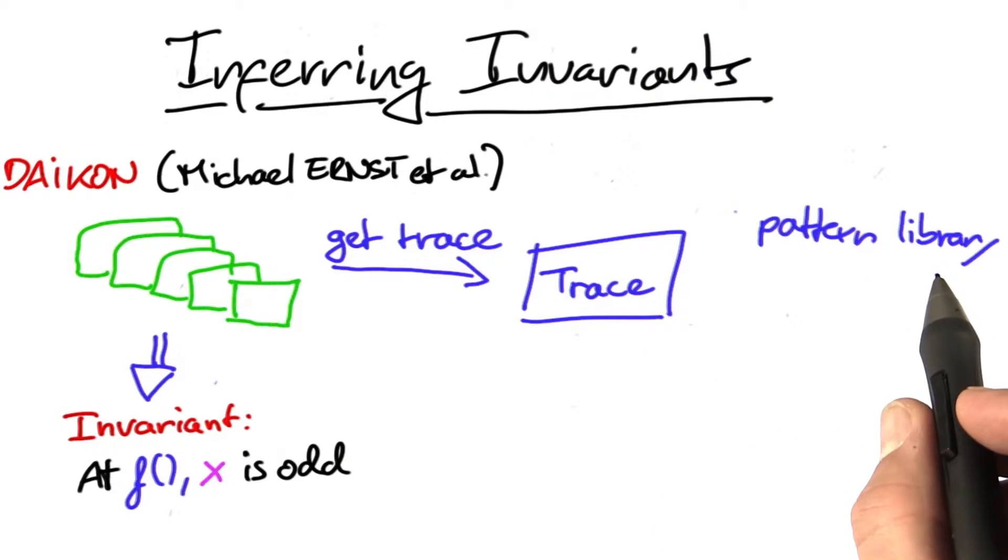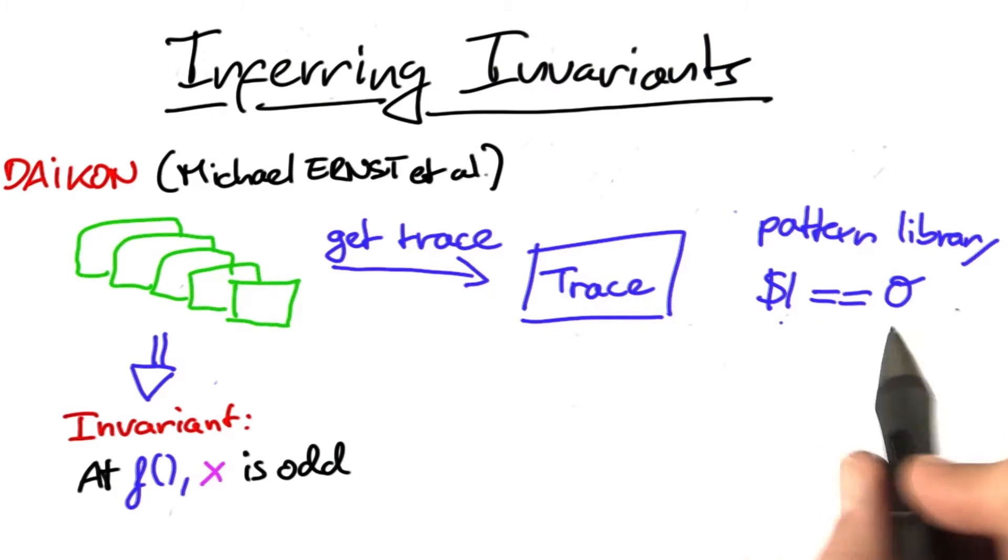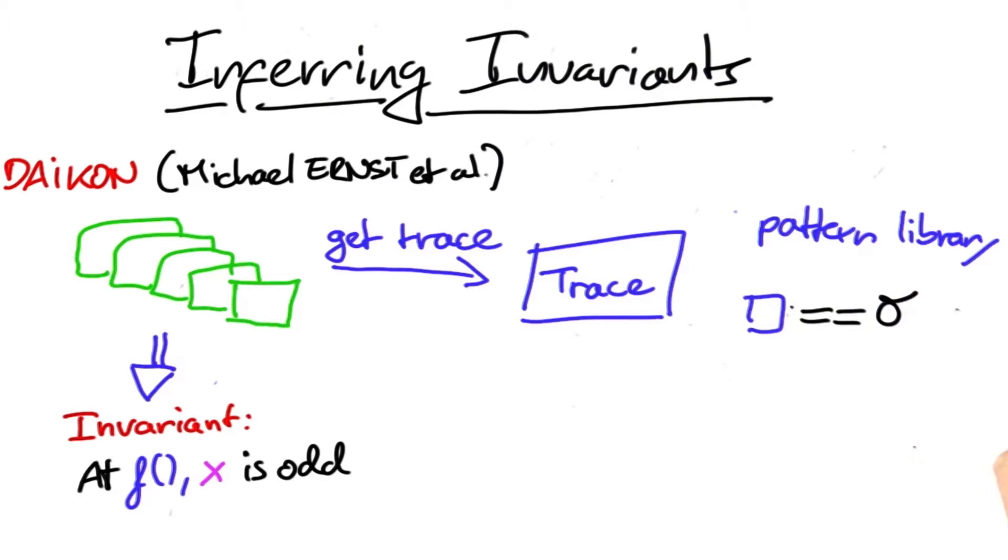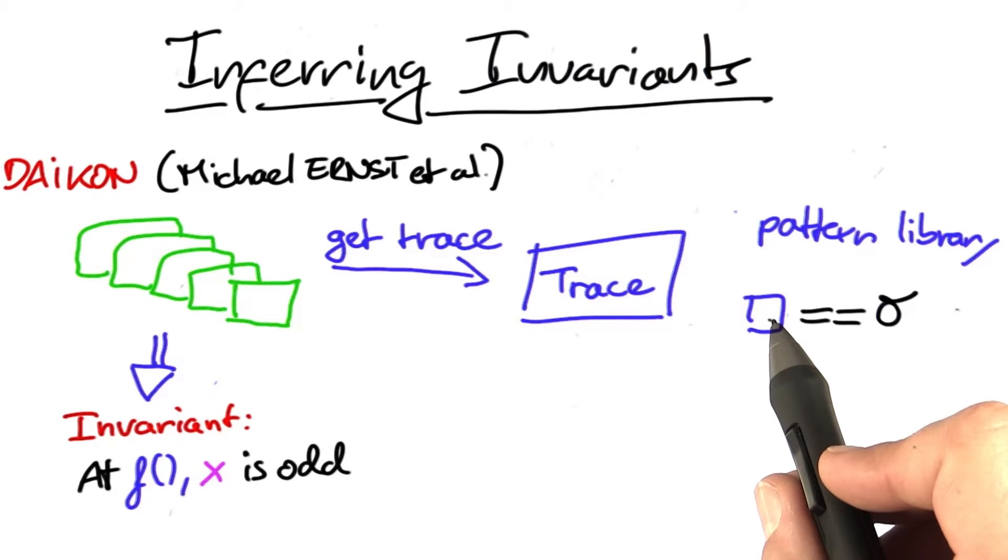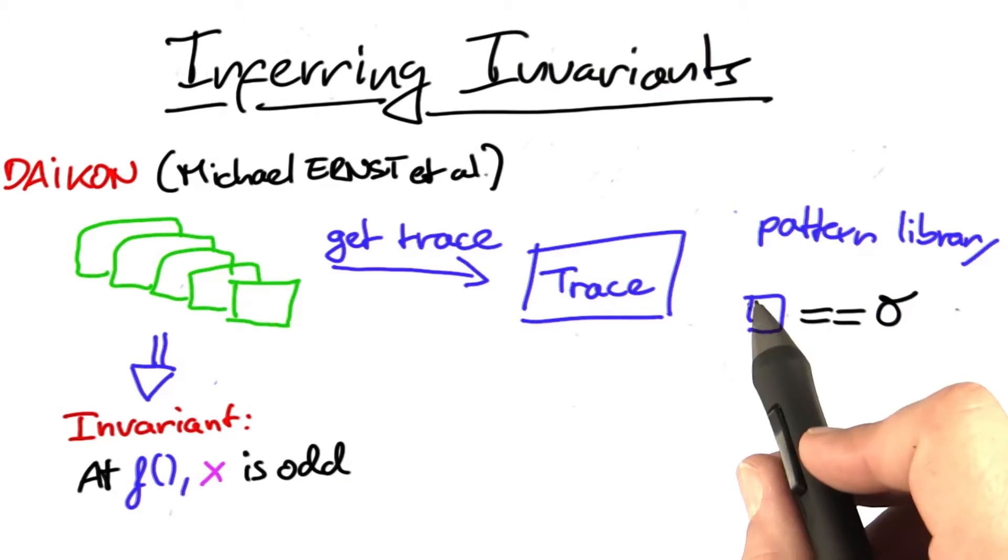What Daikon has built in is a so-called pattern library of possible invariants. Here's such a pattern: dollar one equals zero. We have a placeholder which equals zero. Daikon now takes the trace, looks at all the variables, and checks which variable satisfies this pattern.